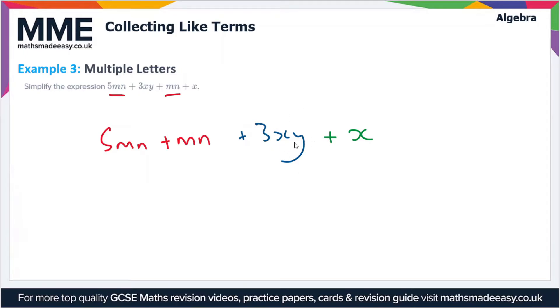We treat the xy essentially as one variable, and then the x on its own is a different variable. So when we simplify this expression we get 6mn plus 3xy plus x. So that is a simplified form.